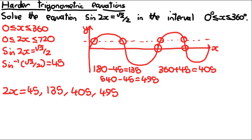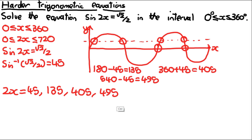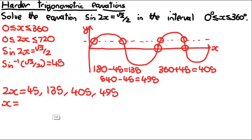However, this isn't the final answer because two solutions are outside the original interval. We're working with respect to 2x, but we need answers with respect to x, so we divide everything by 2. Therefore x equals 22.5, 67.5, 202.5, and 247.5.